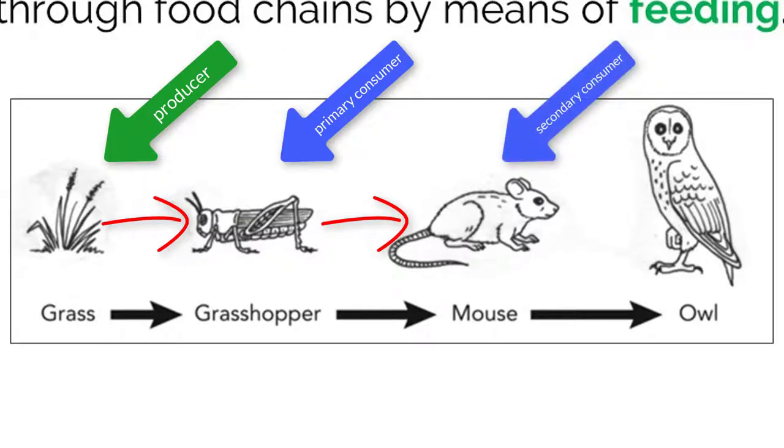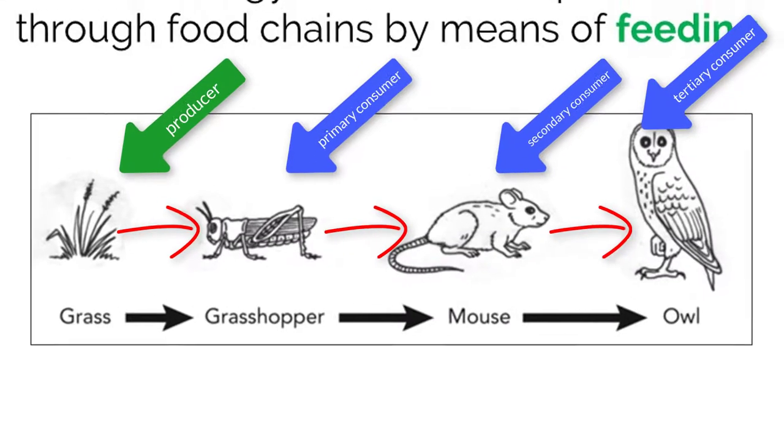When the mouse comes along and eats the grasshopper, the same thing happens. It steals its carbon compounds and uses them to make energy for itself. And of course, the owl then eats the mouse and the energy is transferred again. Understanding feeding relationships allows ecologists to construct food chains and food webs to better understand how energy moves through an ecosystem.